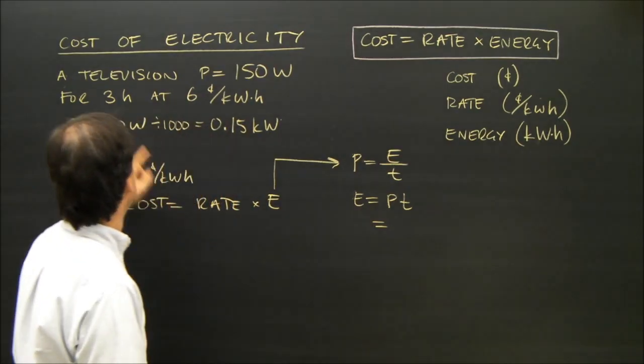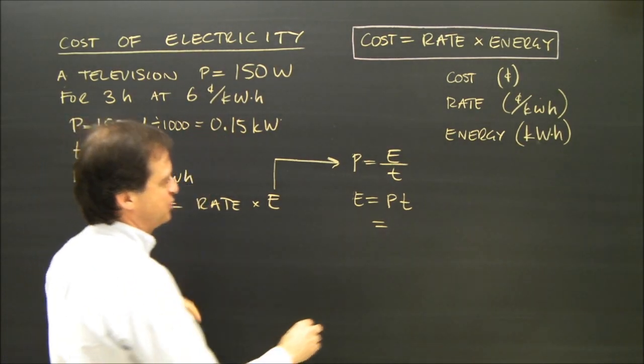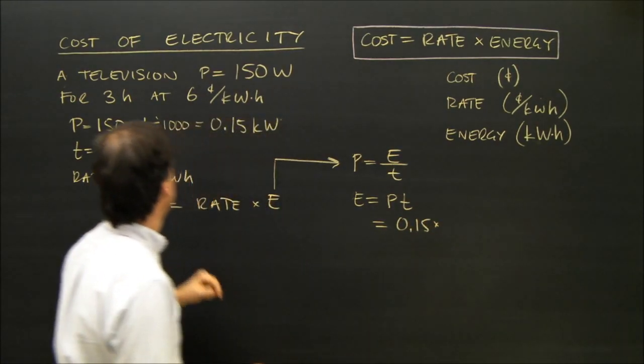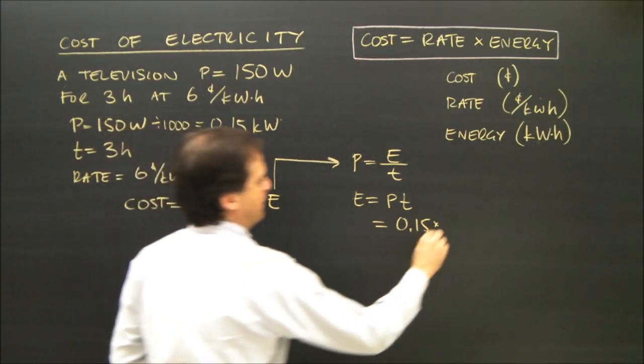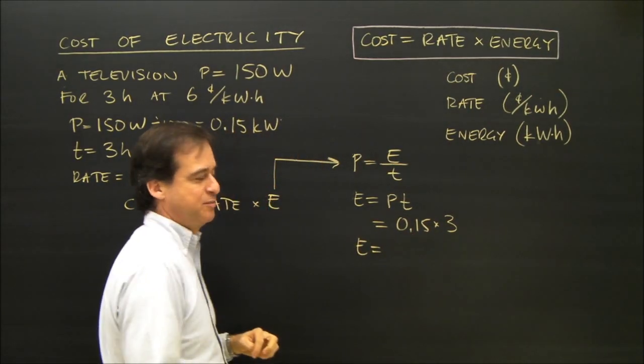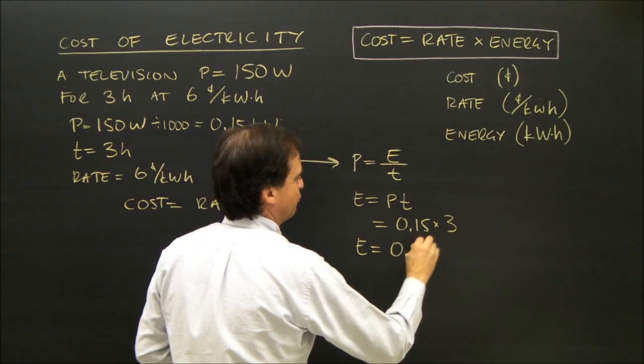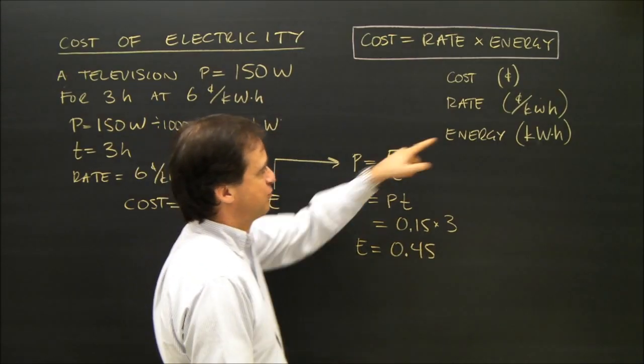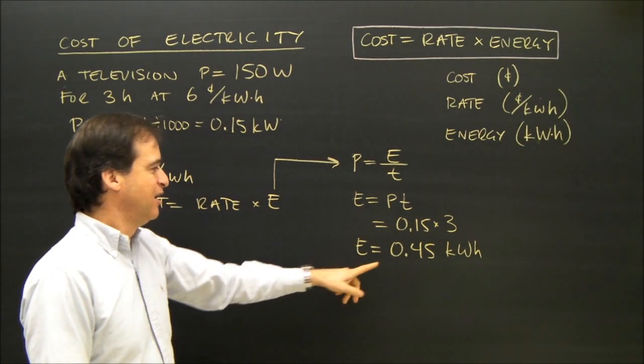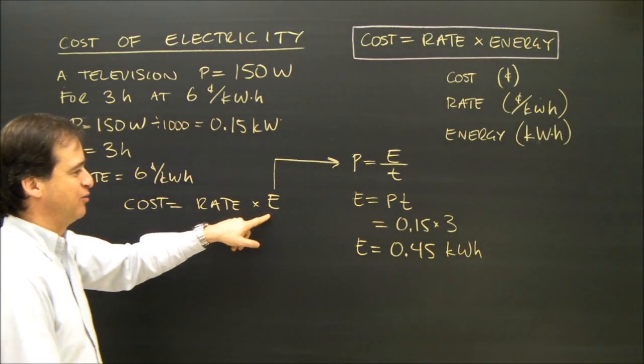What's the power? It's 0.15 kilowatts. So I double check the units. 0.15 times the time, which is three. So my energy is 0.15 times three, which is 0.45. And the units for energy in this case are kilowatt hours. I have my energy. That's what I was looking for.